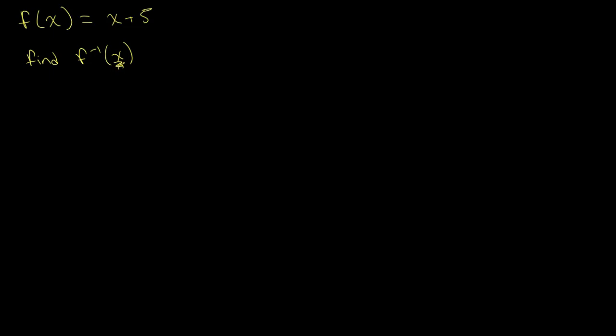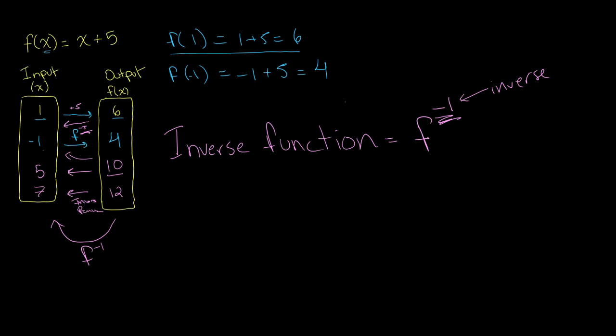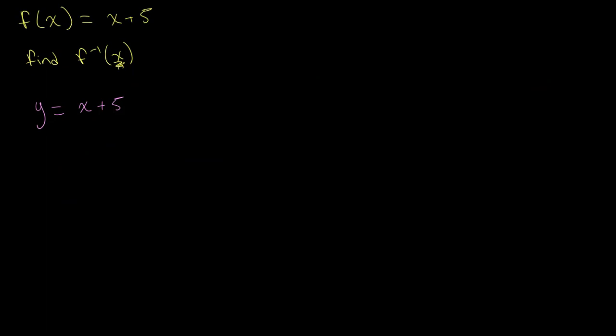We start by writing our equation as y = x + 5. You may wonder why we use y—it's just so our function looks less clunky. Remembering what an inverse function is, we're expressing our input in terms of our output. Here, that means expressing x in terms of y.